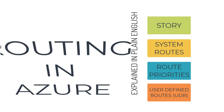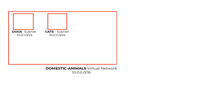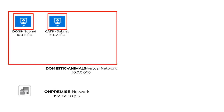Modern Zoo was a fictional company which had an Azure Virtual Network called Domestic Animals Virtual Network with an address space of 10.0.0.0/16, within which they had two subnets: a cat subnet and a dog subnet. They had VM resources spun up in both subnets. The virtual network was also connected to an on-premise network with an address space of 192.168.0.0/16 using a site-to-site VPN.